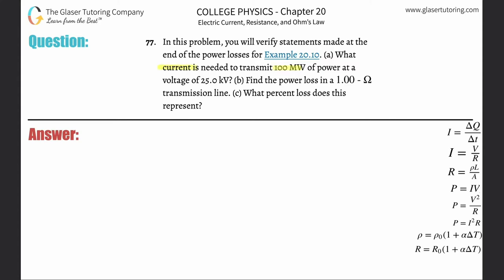What current is needed to transmit 100 megawatts of power at a voltage of 25 kilovolts? So we got to relate power, voltage, current. P equals IV. Power is equal to current multiplied by voltage. Solve this for current. So simply divide out the voltage from both sides and I'm going to literally plug it in.